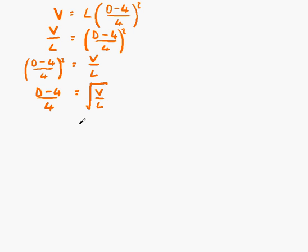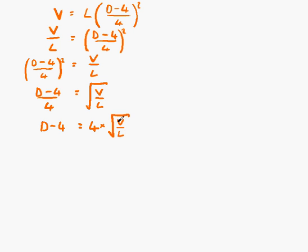What we want is D as the subject of the formula, so the next step is to remove the fraction. We have 4 on the bottom, which means 4 is dividing. If we move 4 onto the right hand side, it will multiply. That leaves us with D minus 4 on the left, and the 4 multiplies on the right. So D minus 4 equals 4 times the square root of V over L.